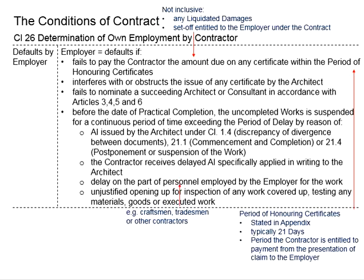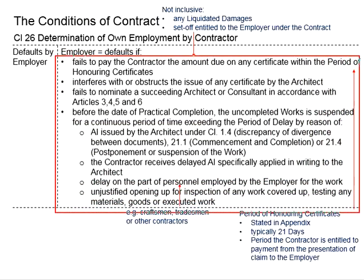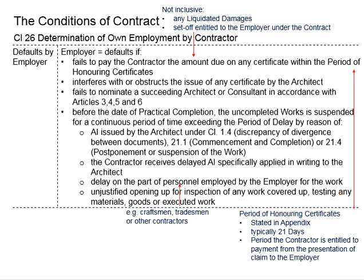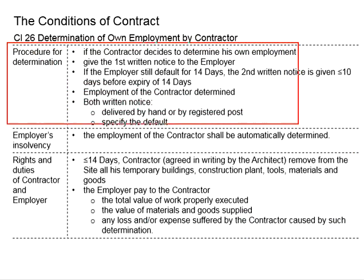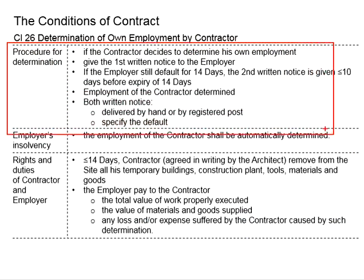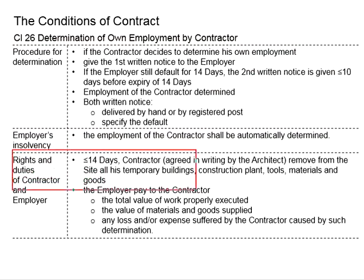With that, the contractor can choose to withdraw himself from the project. This is of course on the basis that the employer actually defaults. There is a procedure for this determination of own employment by the contractor, as well as the things to be done by the employer and the contractor after the determination.